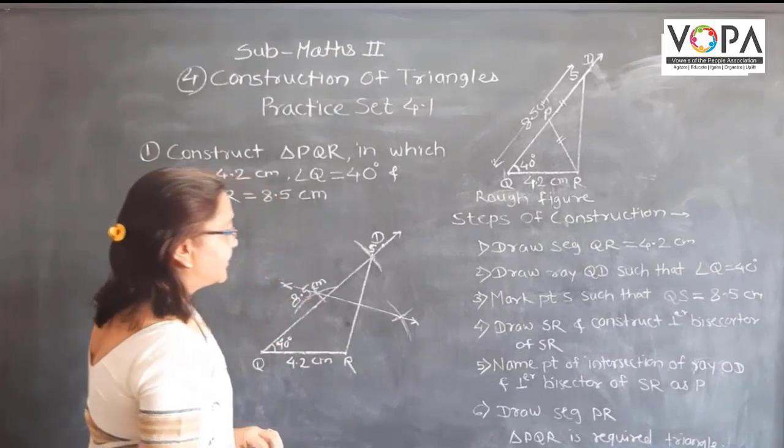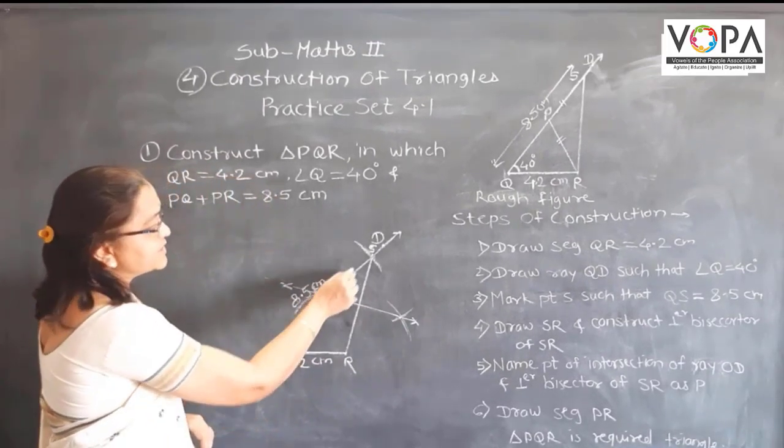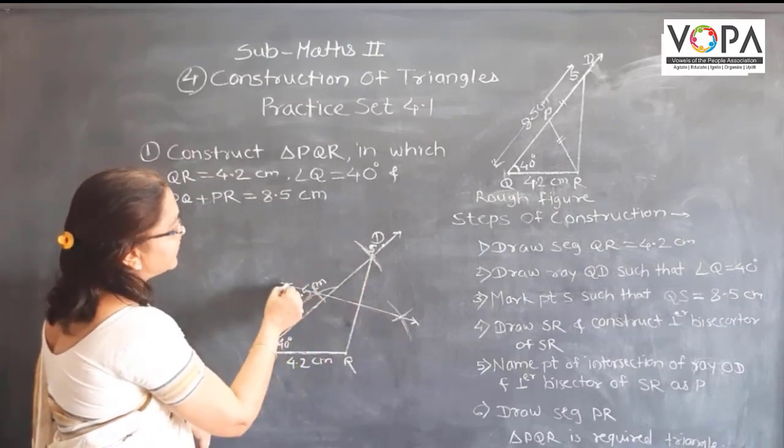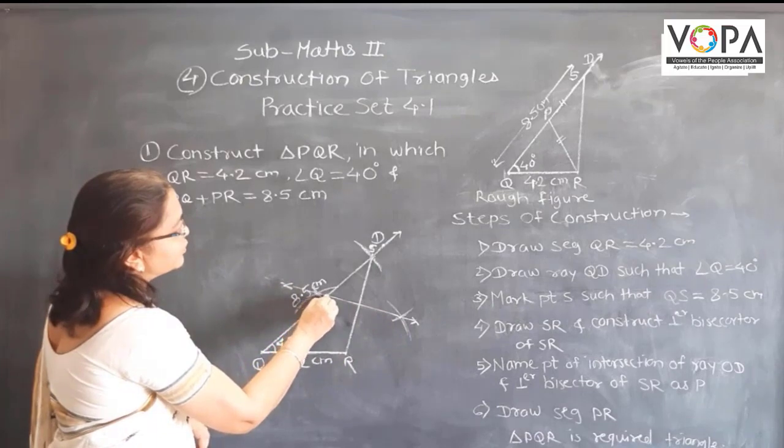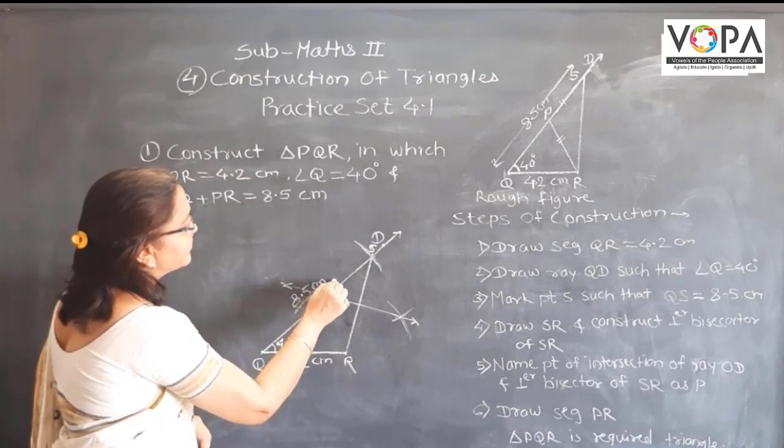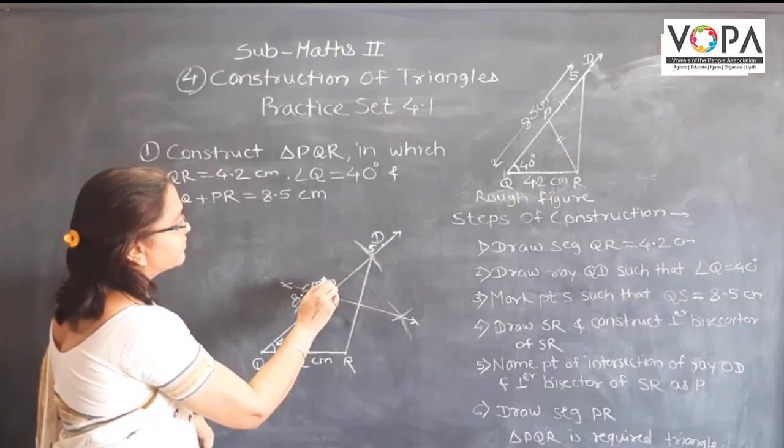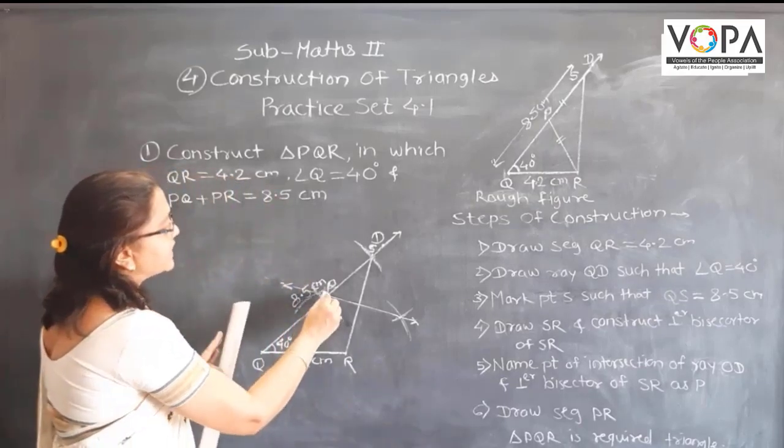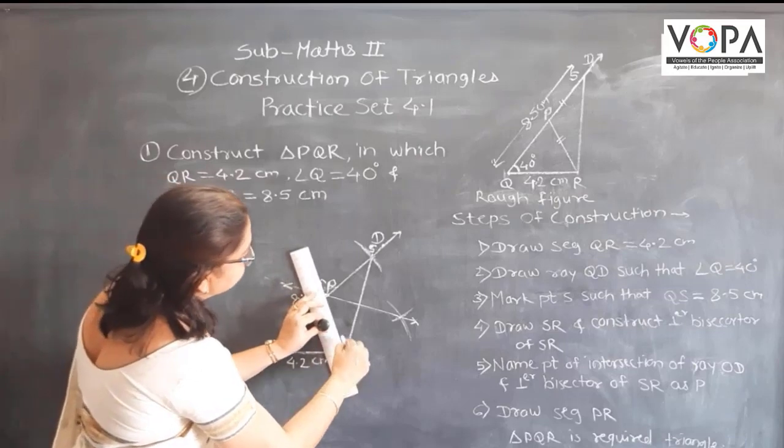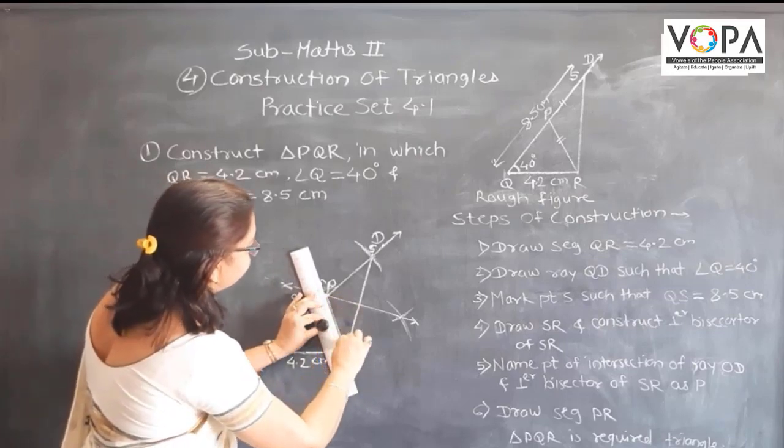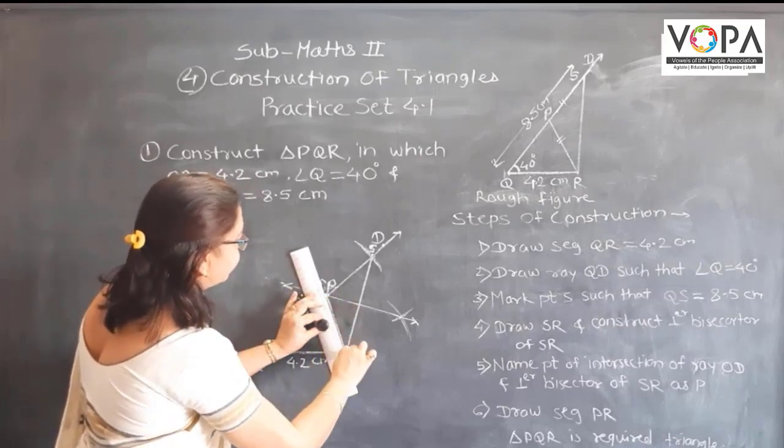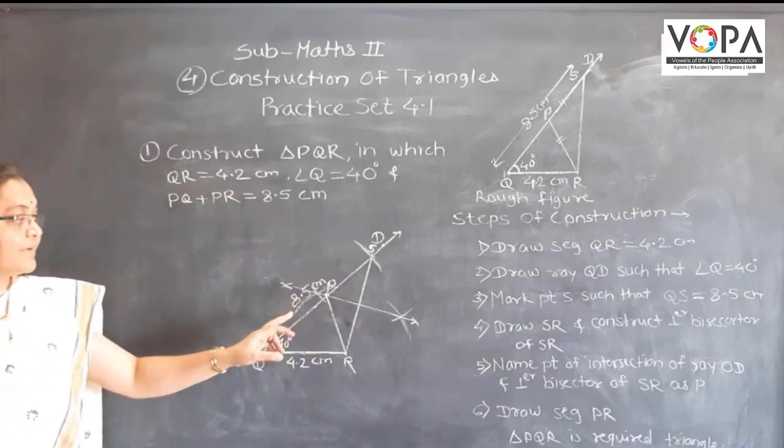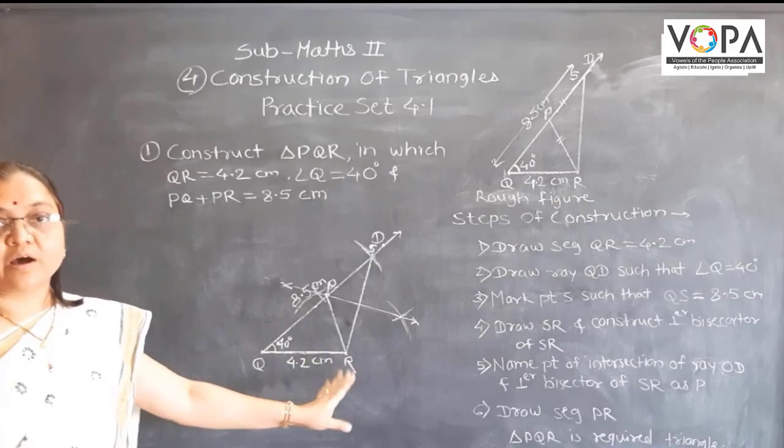Now here, the point of intersection of this ray QS and this perpendicular bisector, suppose this is the point P. Then draw segment PR. This is your required triangle PQR.